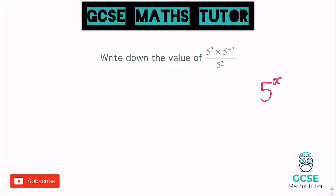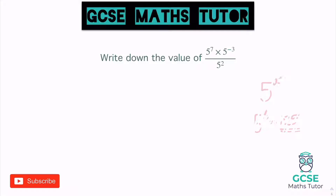So if it came out as five cubed, for example, we wouldn't write it as five cubed — we'd work out five times five times five, which would be 125. So 125 would be the value if this question did come out as five cubed. But let's have a look and see what it actually comes out as. You might notice there's a negative power on the top there — negative three — but we're going to deal with it in the same way as we would with normal numbers.